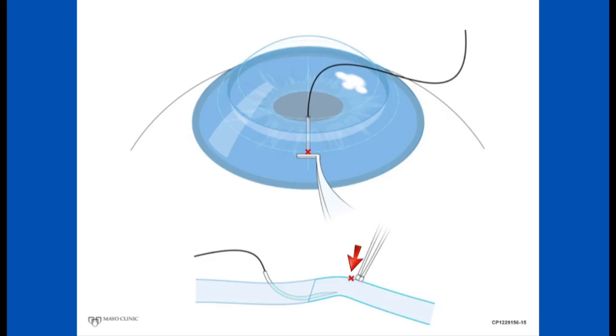Once that rotation occurs, we don't drive the needle to the surface with the needle holder. Rather, we drive the cornea into the needle with the colibri.